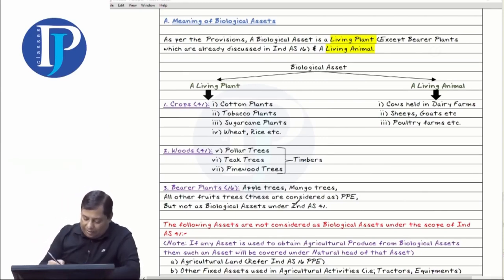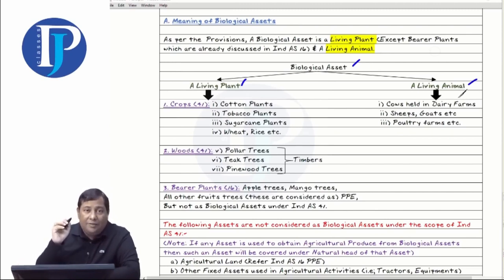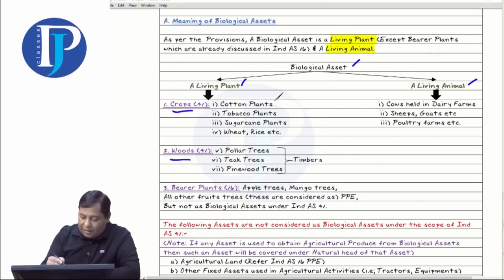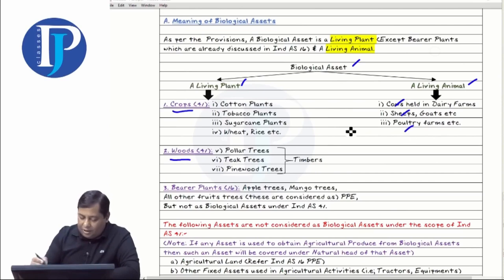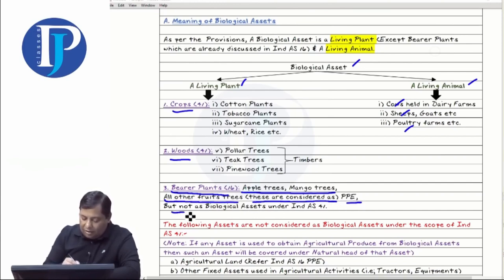So we have understood that biological assets means living plants and living animals which provide agricultural produce. Crops, woods, and animals — examples like cow, sheep, and poultry — are all written here. Bearer plants such as apple trees and mango trees are considered as PPE and not as biological assets.